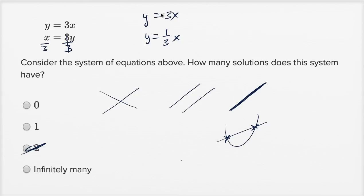And so these lines don't have the same slope. So they're not going to be parallel, and they're not going to be the same line. So these are going to intersect. These are going to have one solution, exactly one solution.